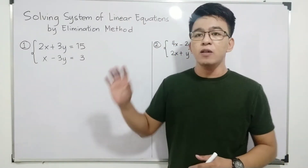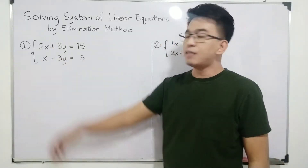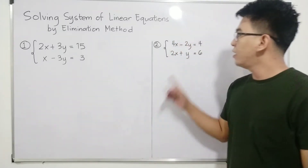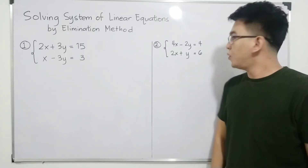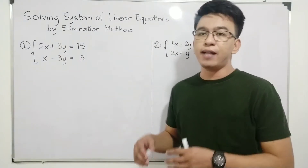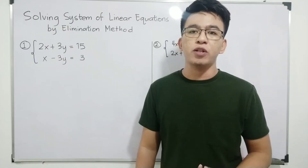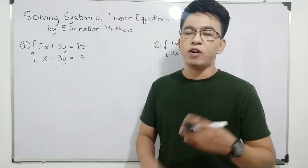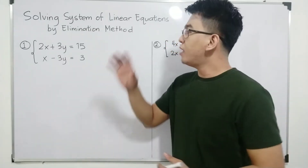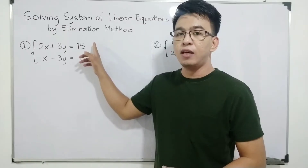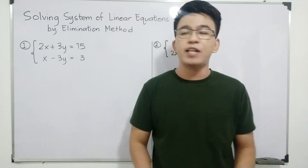We have here two different systems of equations. We have 2x plus 3y is equal to 15, and x minus 3y is equal to 3. Then we have the second system: 4x minus 2y is equal to 4, and 2x plus y is equal to 6. The goal of solving a system of linear equations is to find the value of x and the value of y that satisfy both equations.